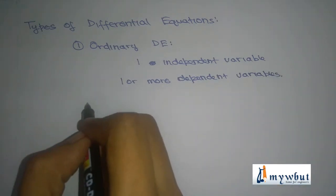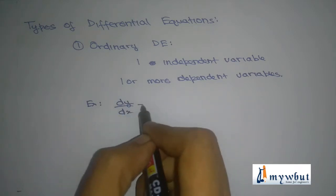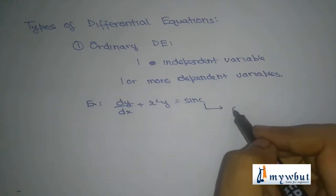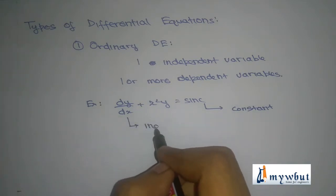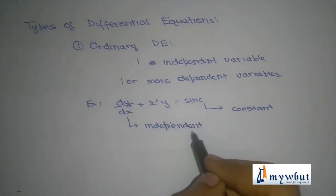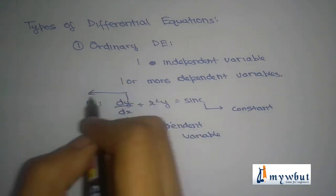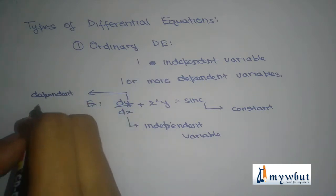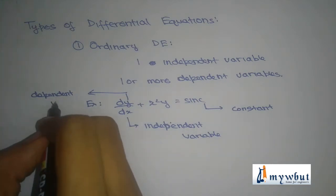For example, in the equation dy by dx plus x² y is equal to sin c, where c is any arbitrary constant, here x is the independent variable and y is the dependent variable. Since the value of y depends on the value of x, therefore it is the dependent variable.